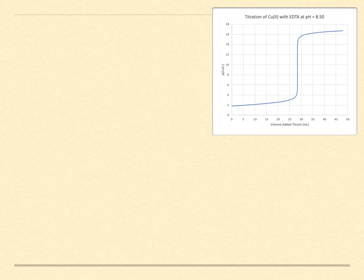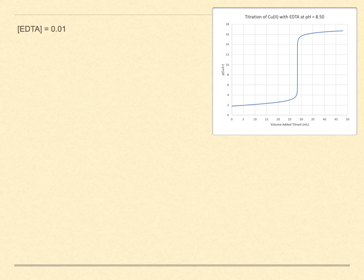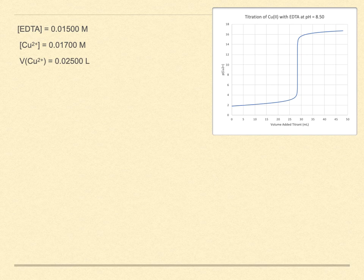So this titration curve is for the titration of copper 2 plus with EDTA at a pH of 8.50. The copper concentration is 17 millimolar, while the EDTA concentration is 15 millimolar. The aliquot volume is 25 milliliters. The log of the formation constant for copper and EDTA is 18.78, but we have had to adjust the pH to 8.50, and the value for alpha, the fractional composition of the EDTA, is 0.0133. Well, together with that data, they give a conditional formation constant of 8.014 times 10 to the 16.